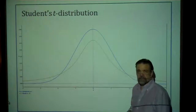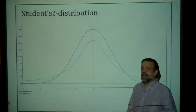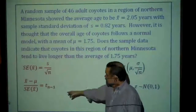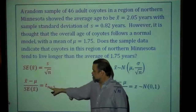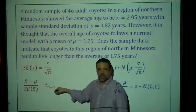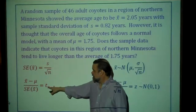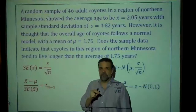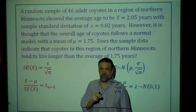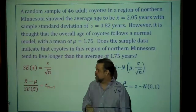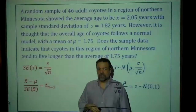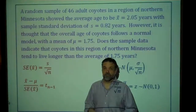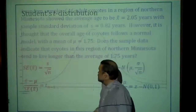It's a t-distribution with n − 1 degrees of freedom. There are many different t-distributions, each defined by its degrees of freedom. Let's look at what those look like.